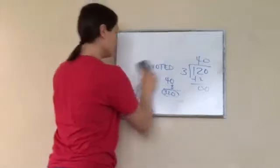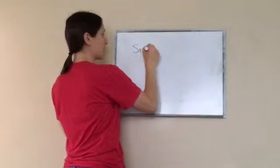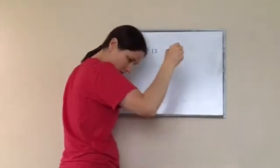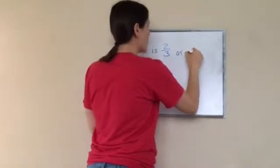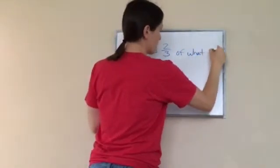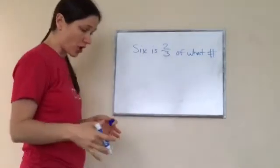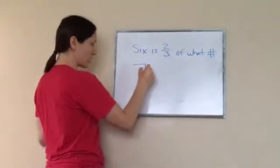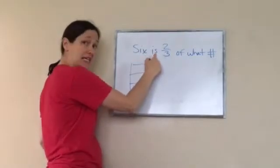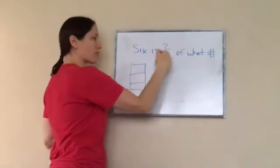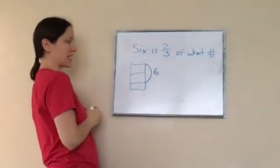Last problem, and we're done. Here's what it says: Six is two-thirds of what number? Six is two-thirds of what number? First of all, let's draw our chart, three of them. One, two, three. Six is two out of the three. So this makes a total of six.